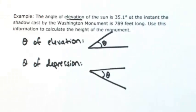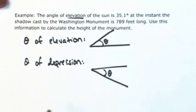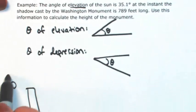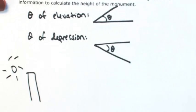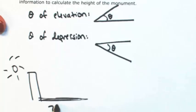So we have an angle of elevation of the sun. Let's have our Washington Monument. I'm no artist by any means here, so let's say that's the Washington Monument. The sun is behind it, so it's casting a shadow that's 789 feet long.